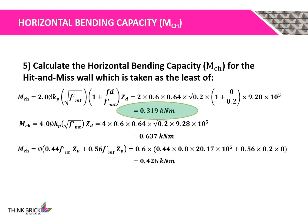Next, the horizontal bending capacity for the Hidden Mist Brick Wall is taken as the minimum of the three equations stated previously. It was calculated that the first equation, representing step failure, has the lowest value of 0.319 kNm.